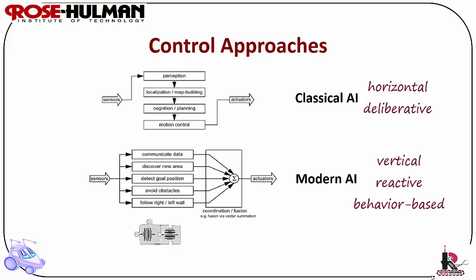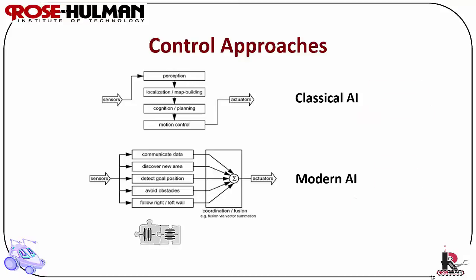Hybrid control is a combination of classical and modern AI. This is similar to how linear control systems are separated into classical and modern control, where classical control is in the frequency domain with transfer functions and a single input and single output, whereas modern control is in the time domain or state space with multiple inputs and multiple outputs. Remember, there is no one correct approach — it depends upon what's ideal for your system, your goals, or the robot's task.